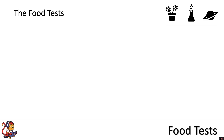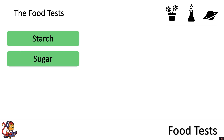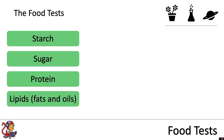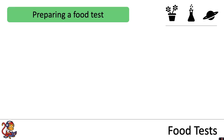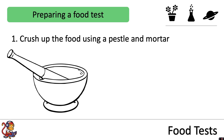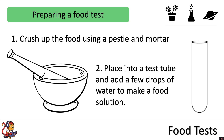The food tests that we will look at in this video are the tests for starch, a complex carbohydrate, sugar, a simple carbohydrate, protein, and lipids, fats and oils. When preparing a food test you would crush up the food using a pestle and mortar. You would then place it into a test tube and add a few drops of water to make a food solution.